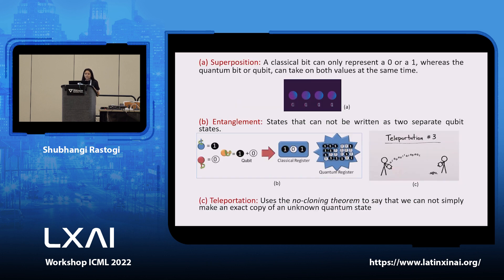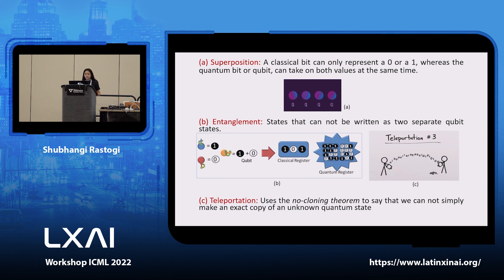Superposition means a qubit can have both values zero and one at the same time. Entanglement means systems are highly correlated, so information gained from one system also gives you information about the other. Teleportation uses the no-cloning theorem, which states that we cannot simply make an exact copy of an unknown quantum state.